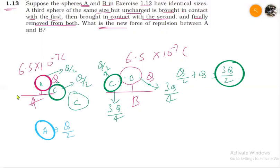Now what do we need to remove C? The new B will have 3Q by 4 charge. Now we have Q1. QA is equal to originally Q by 2, and QB is equal to 3Q by 4.